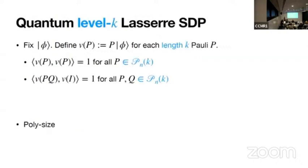And the function is supported on exponentially big space. Now you can consider level k lasserre, where you restrict the Paulis to be length k. You satisfy both constraints, but now it's poly-sized.